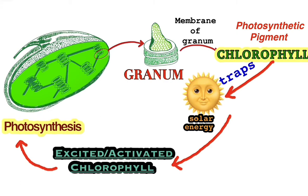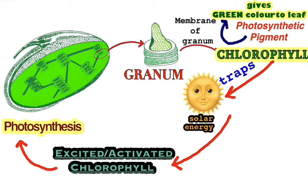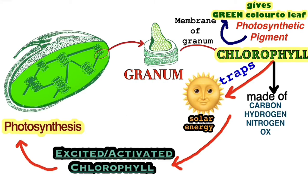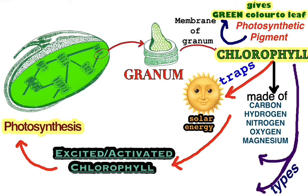Chlorophyll is a pigment because it gives colour — it gives green colour to the leaves of the plants. This chlorophyll is made up of carbon, hydrogen, nitrogen, oxygen, and magnesium. Generally in plants we find two types of chlorophyll: chlorophyll A and chlorophyll B.